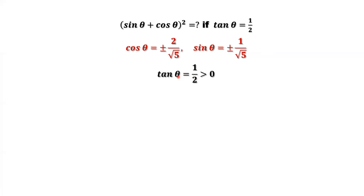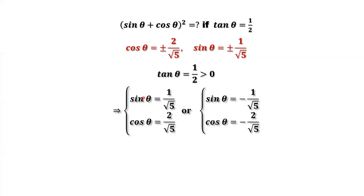Theta must be in the first quadrant or the third quadrant. In the first quadrant, sine theta and cosine theta are both positive. In the third quadrant, sine theta and cosine theta are both negative. So sine and cosine have the same sign — positive or negative — at the same time.